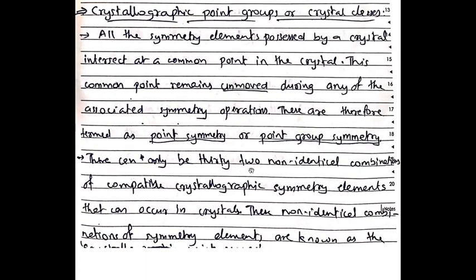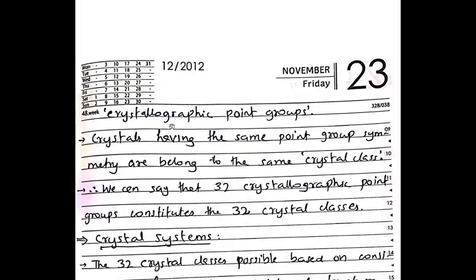There can only be 32 non-identical combinations of compatible crystallographic symmetry elements that can occur in a crystal. If you combine symmetry elements, there are 32 combinations possible. These non-identical combinations of symmetry elements are known as the crystallographic point groups.